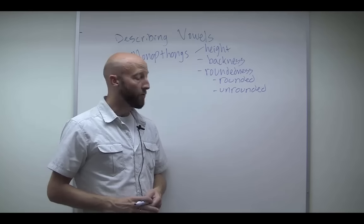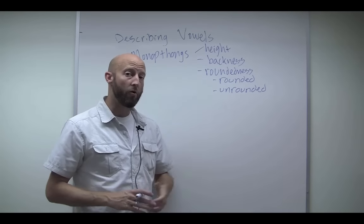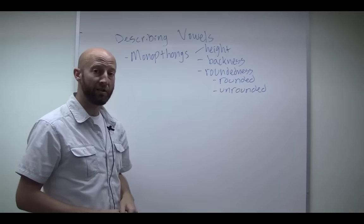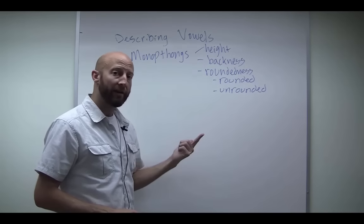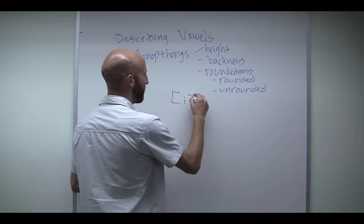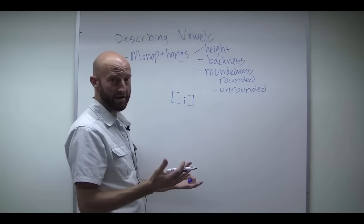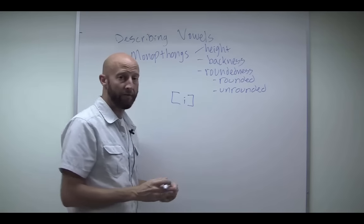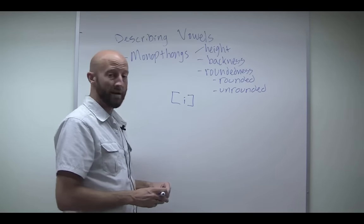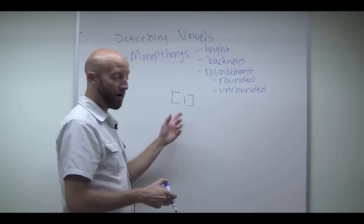So just like with consonants, there's a specific order that linguists use when they're talking about vowel sounds. They always talk about vowel sounds in this order. It's height, then the backness, and then the roundedness. So for example, ee is, can you guess? Go ahead and pause the video and see if you can figure it out. It is a high, front, unrounded vowel.